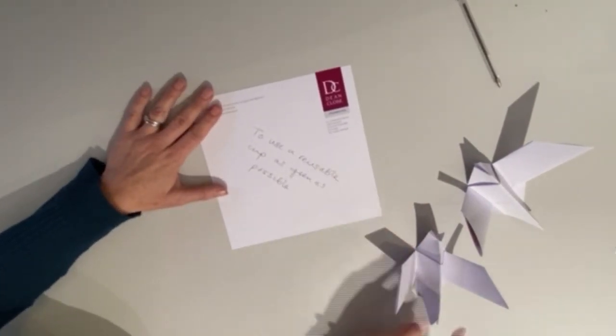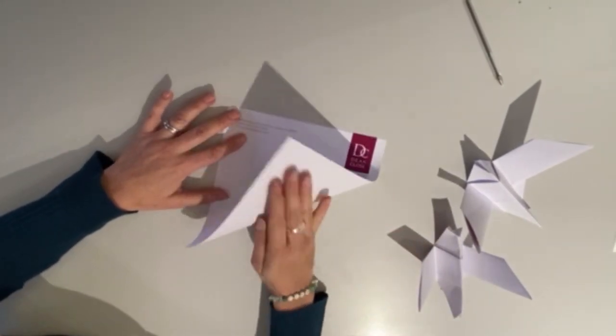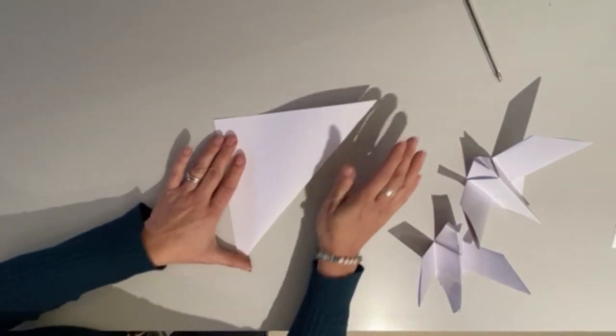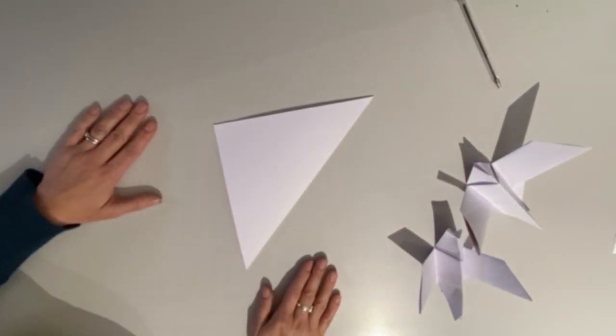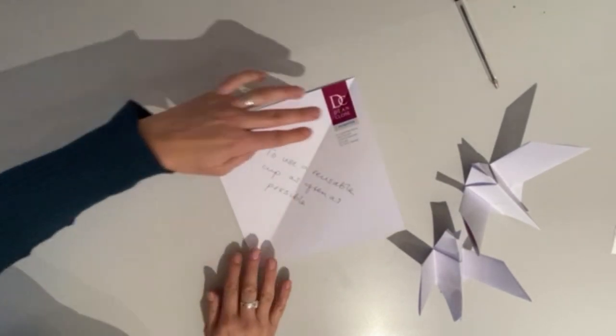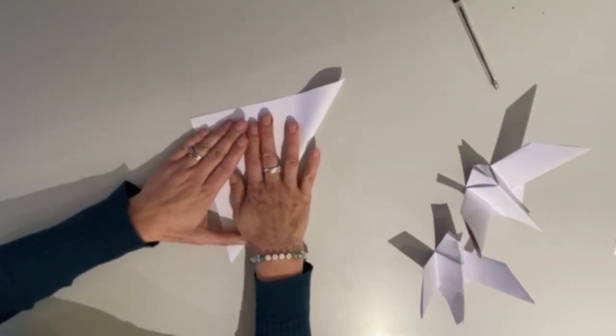Now I'm going to fold this into a pigeon. First thing I'm going to do is fold that piece of paper diagonally in half to form a triangle. Open it up again, turn it, fold it in half again.